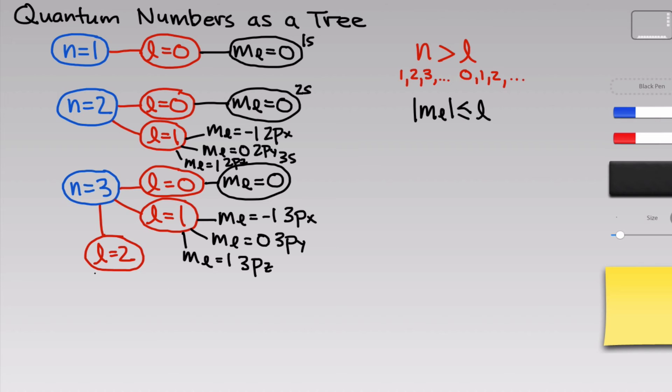For l equals 2, now we have five possible allowed values of m sub-l. We have m sub-l equals negative 2, negative 1, 0, 1, or 2.